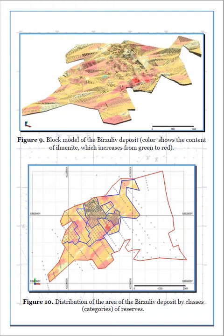The created model is filled with interpolated values of Ilmenite content by the method of inverse distances using the 3D estimation of blocks function (Figure 9). The interpolation occurs in several stages, each of which corresponds to a certain category of reserves: B, C1, and C2. One of the important parameters of interpolation is the size of the search ellipse; they increase from the highest category of reserves to the lowest and are based on reasonable drilling network parameters: 100×40 meter, 200×60 meter, and 400×80 meter, respectively.